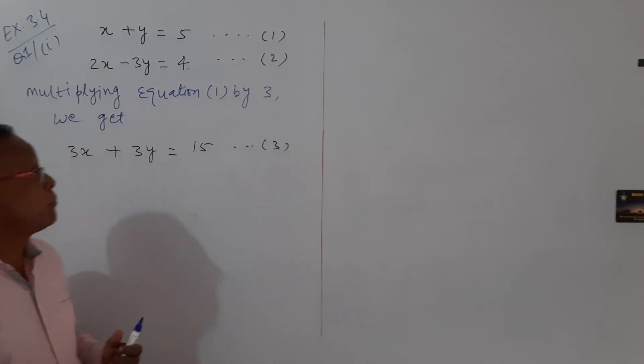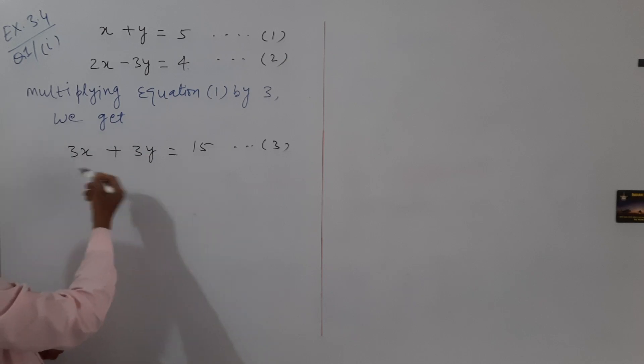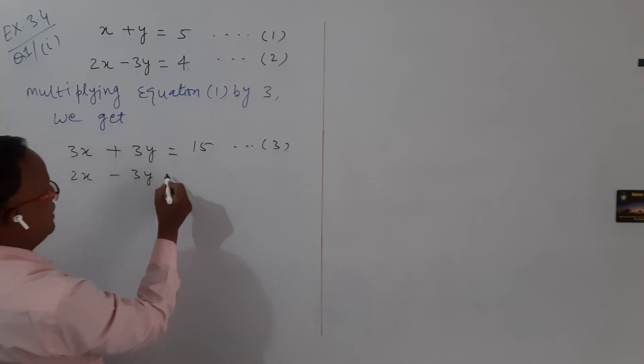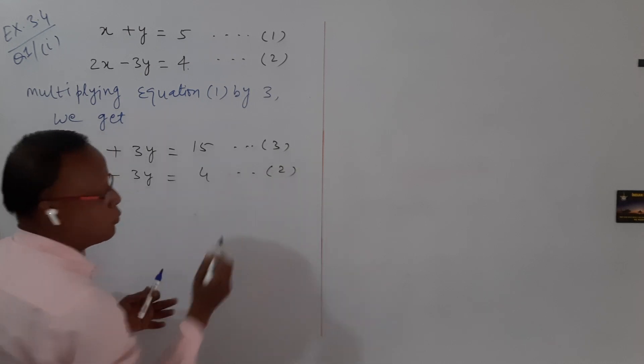When I multiply equation 1 by 3, the modified equation becomes equation 3. Now write down equation 2 as it is: 2x minus 3y equals 4.